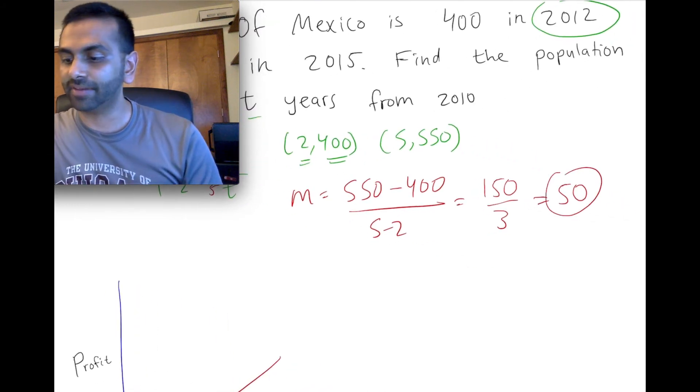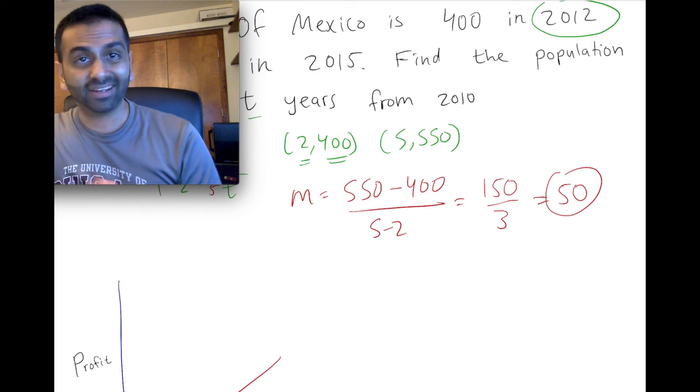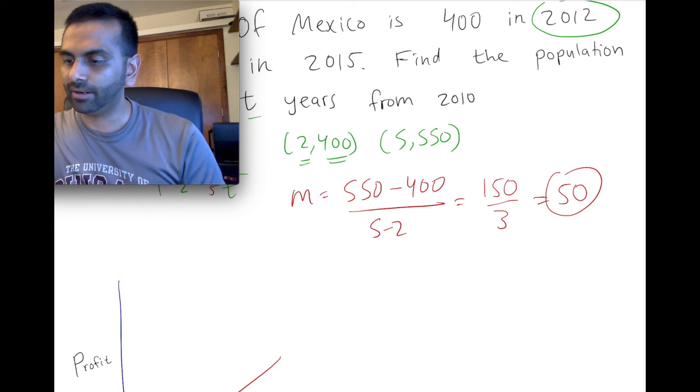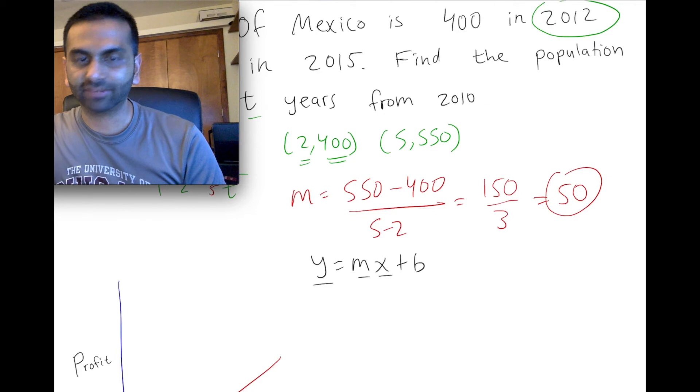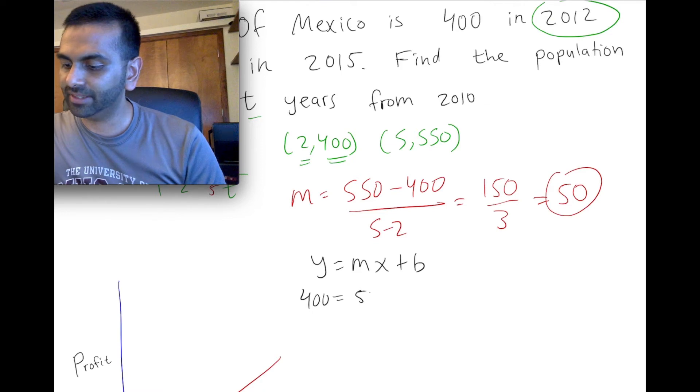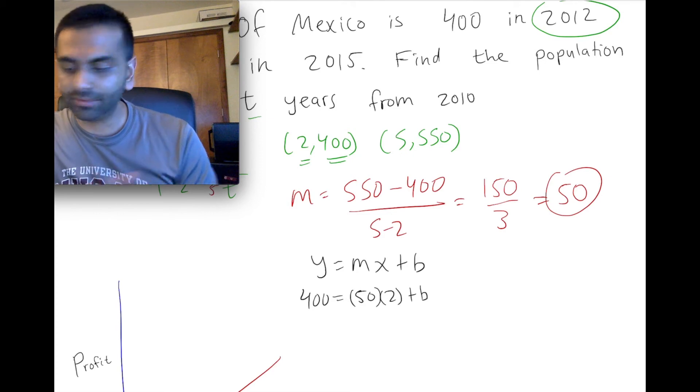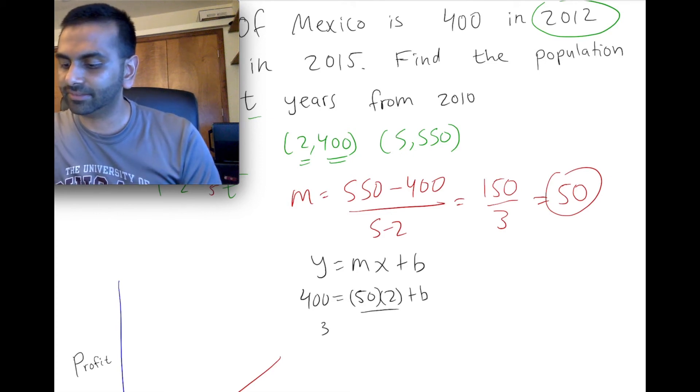So anyway, the slope is 50, and now we can use either point. Let's use this first one to find the intercept. So in our Y equals MX plus B, we can essentially plug in Y, M, and X, right? So we could plug in that our Y is 400, our M is 50, and our X is 2, and 50 times 2 is 100. Subtract 100 from both sides, and that's 300. So our B is 300, so our final answer is Y equals MX plus B, which is 300.